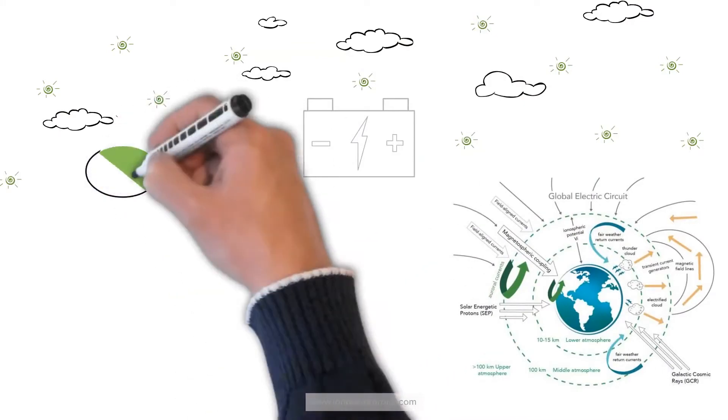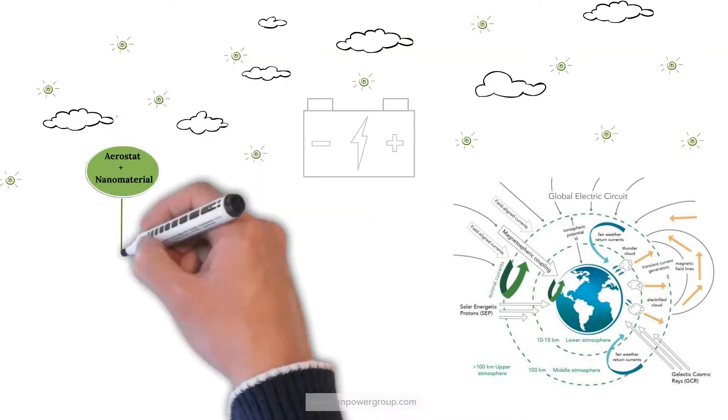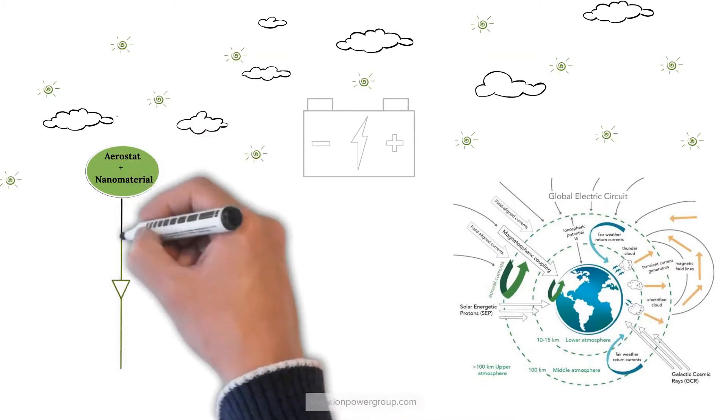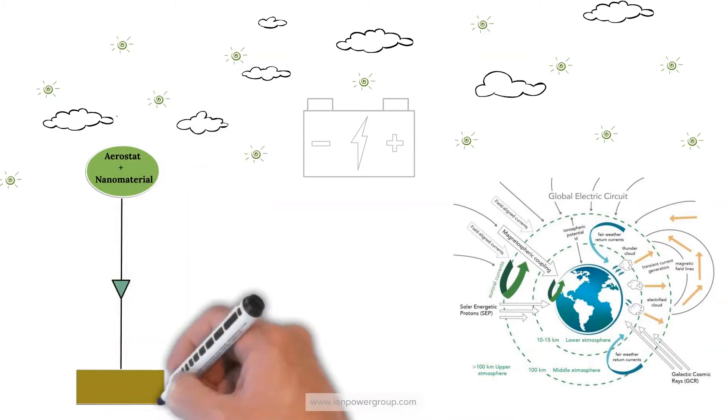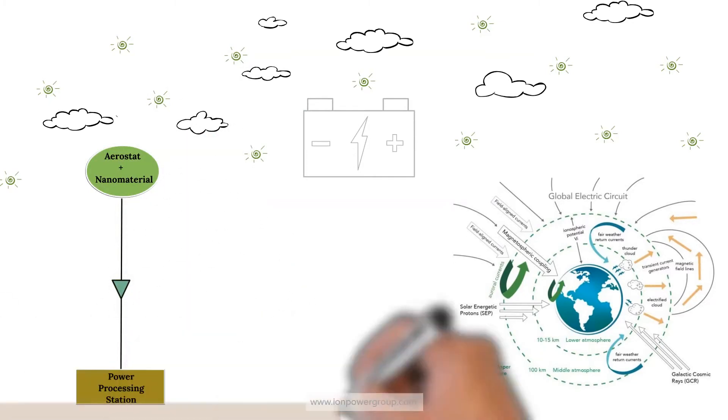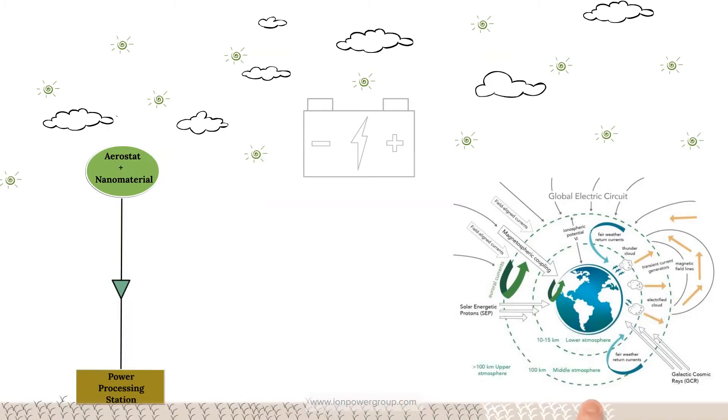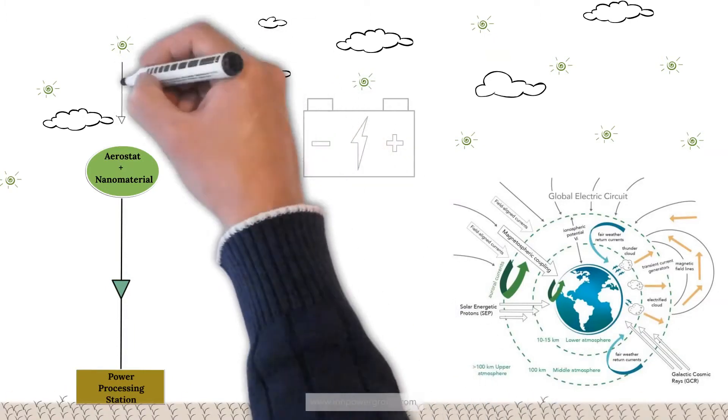Ion Power Group discovered that patented nanomaterial is effective at harvesting electricity day and night from the atmospheric ions in all weather from the Sun-powered global electric circuits.